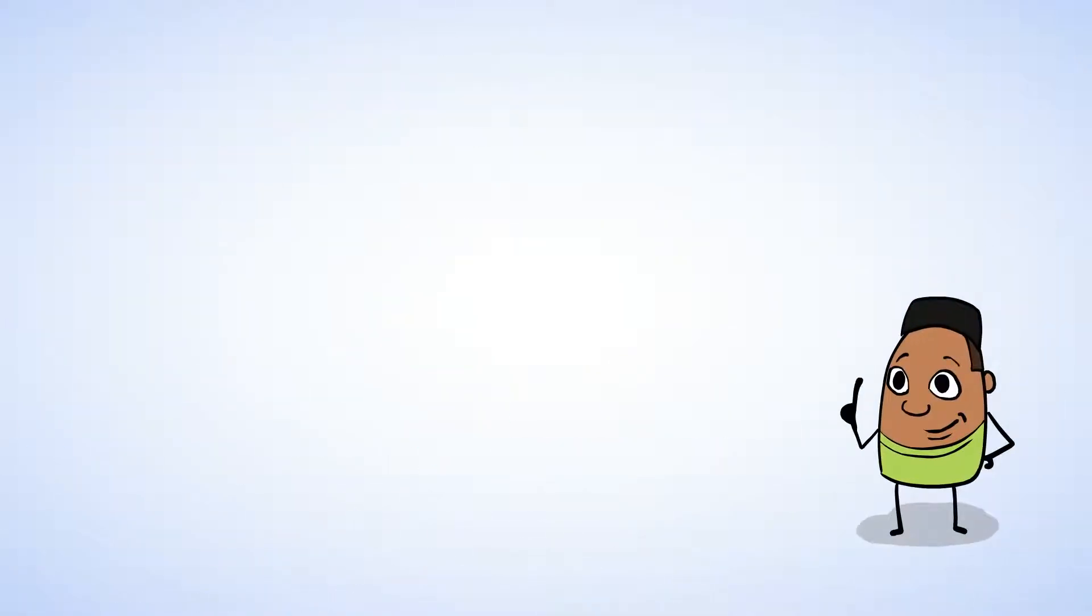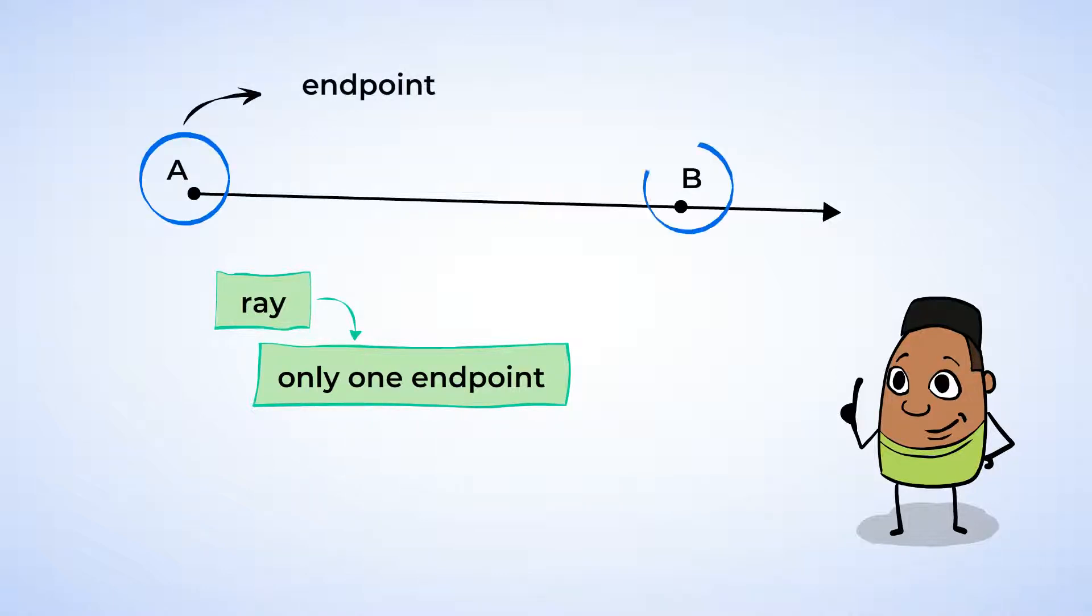Now what if we start at point A and keep going past point B? Well this is called a ray. A ray has only one endpoint. When labeling a ray, we start with the point that is the endpoint and use another point to name it. So this ray is called AB because the endpoint is at point A and the ray continues through point B.